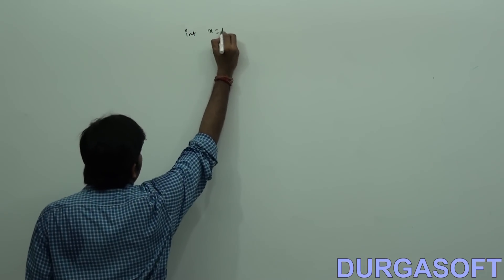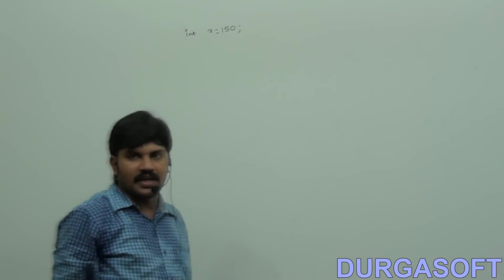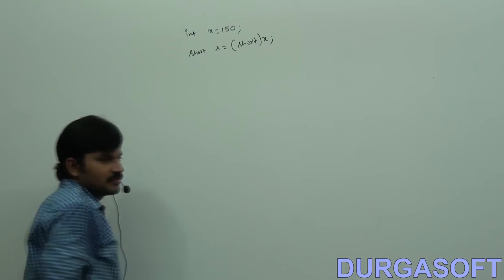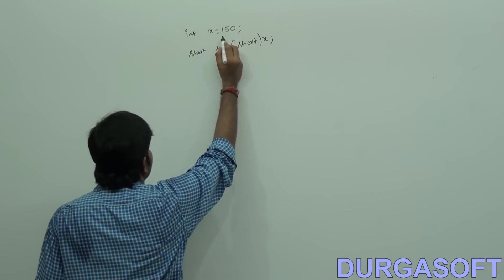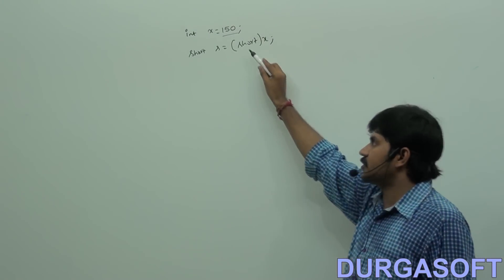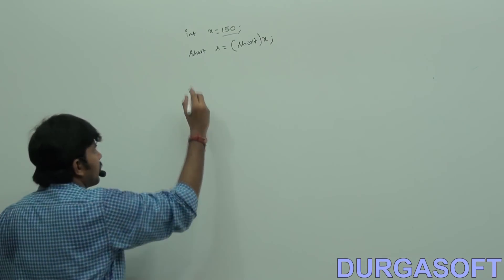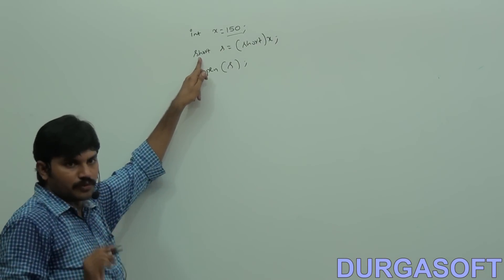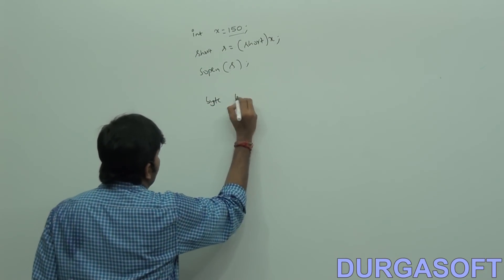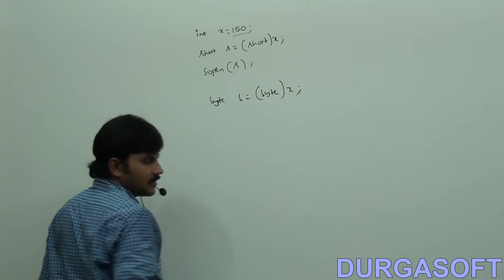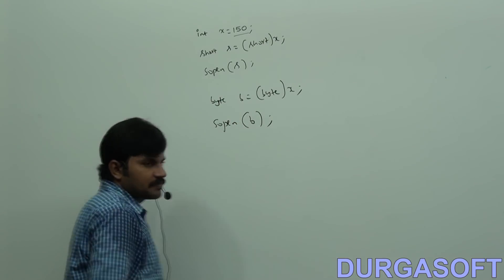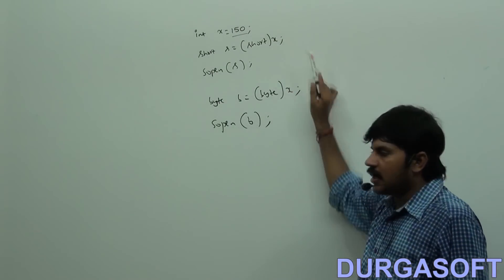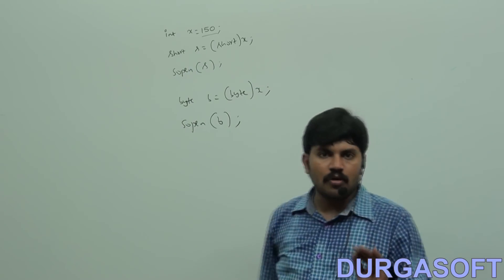Here, I am taking int x equal to 150. Short s is equal to (short) x. Short s is equal to (short) x. Can you tell what is the x value? 150. Is 150 within the range of short or not? Yes. That's why there should not be a problem at all. Print s — maybe we will get 150, because 150 is a short value only.